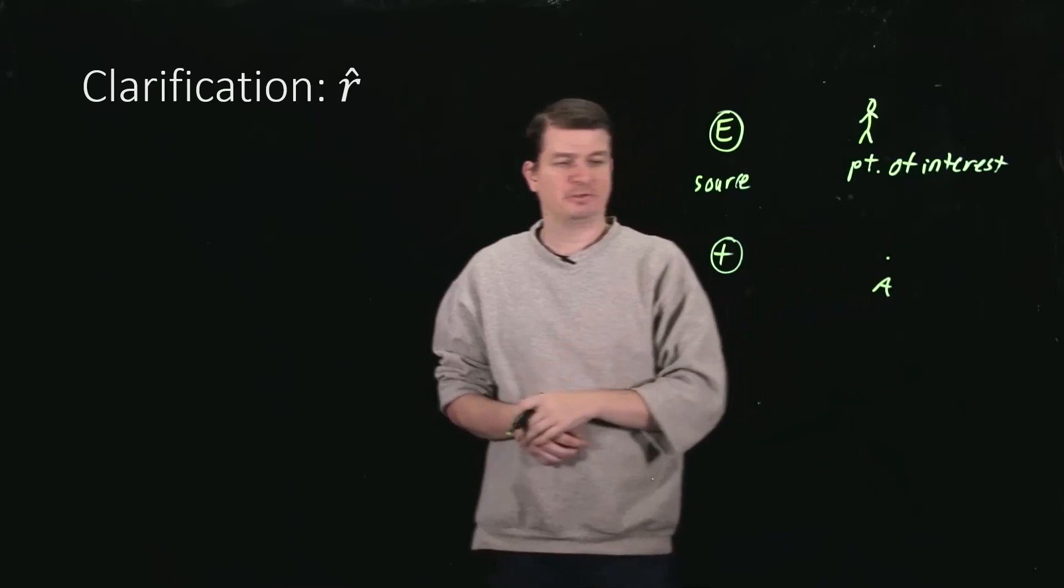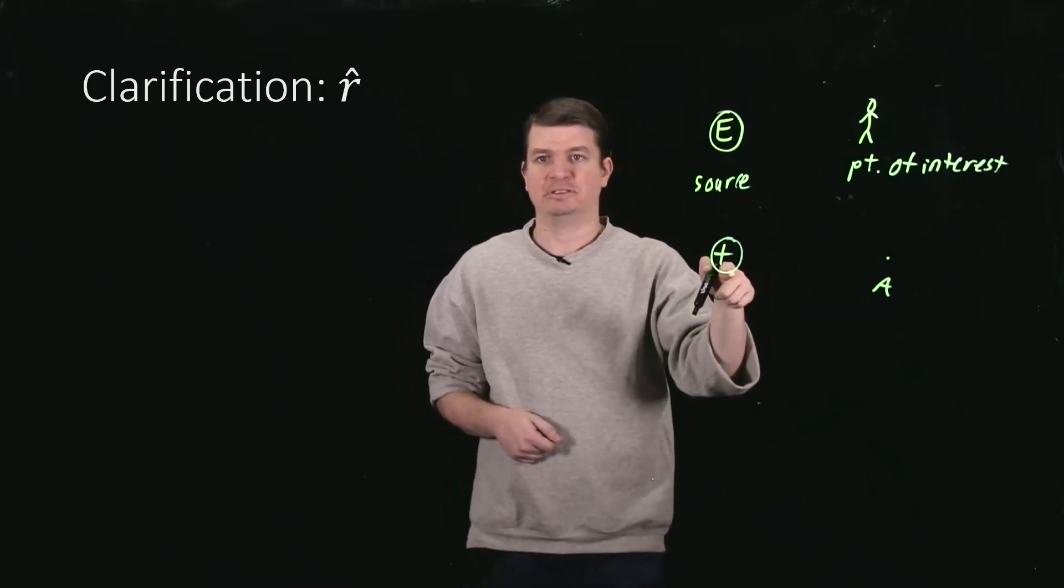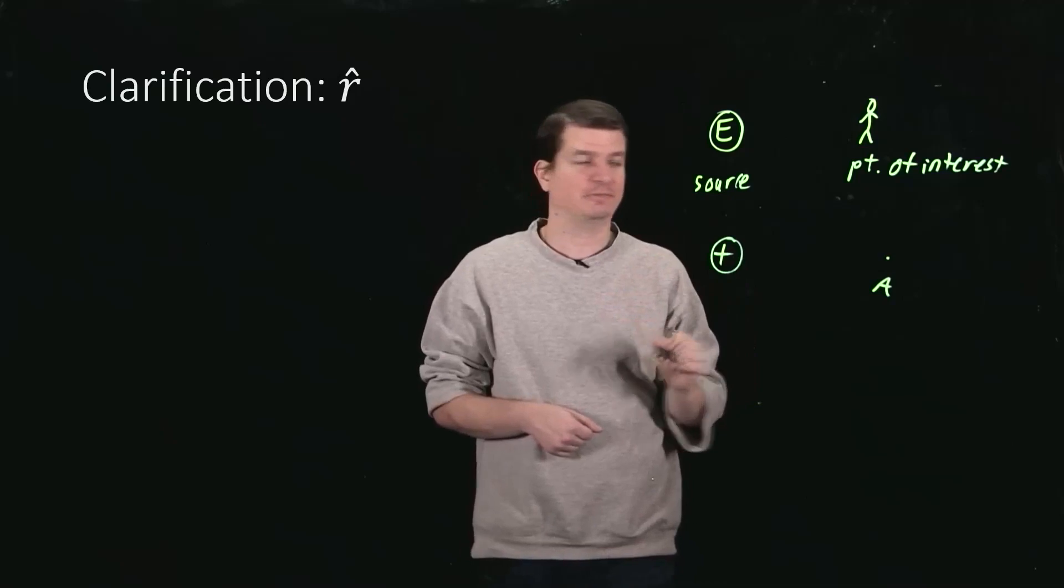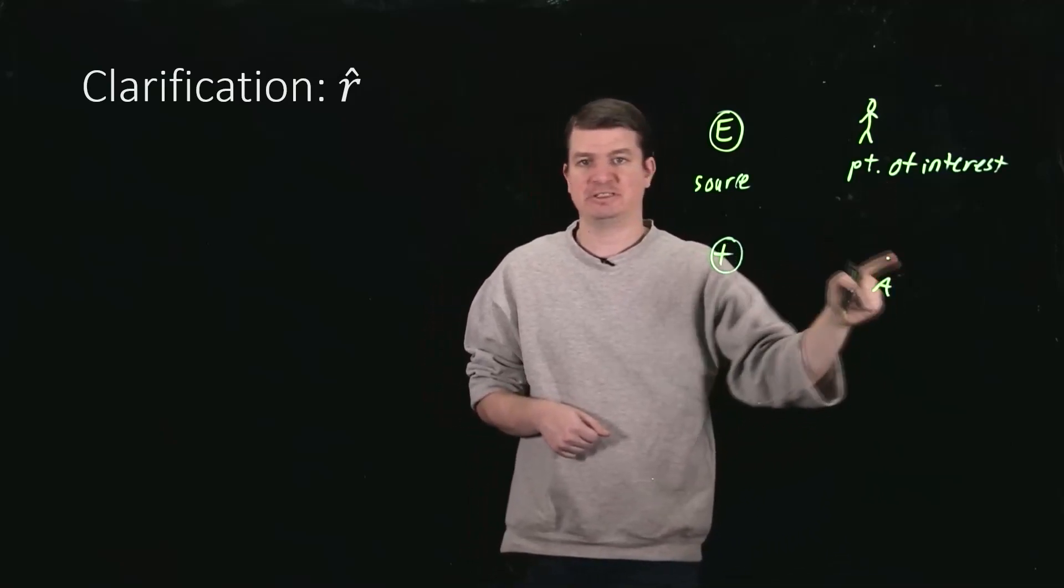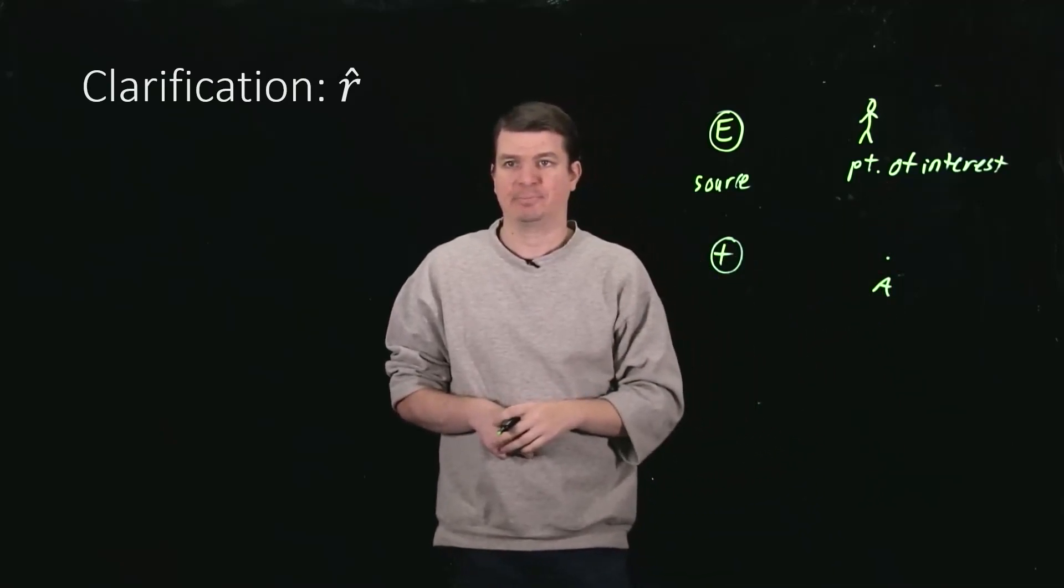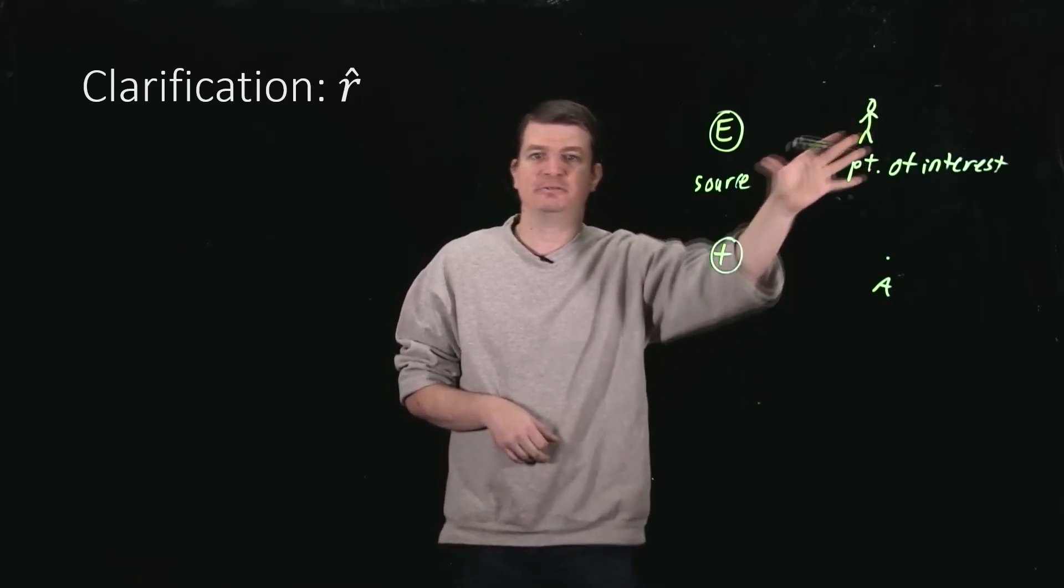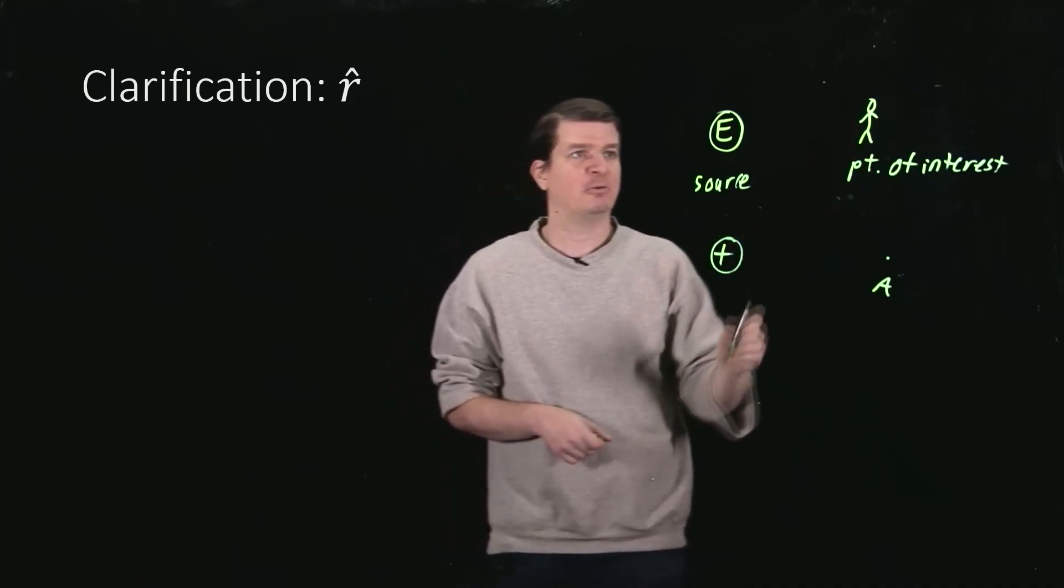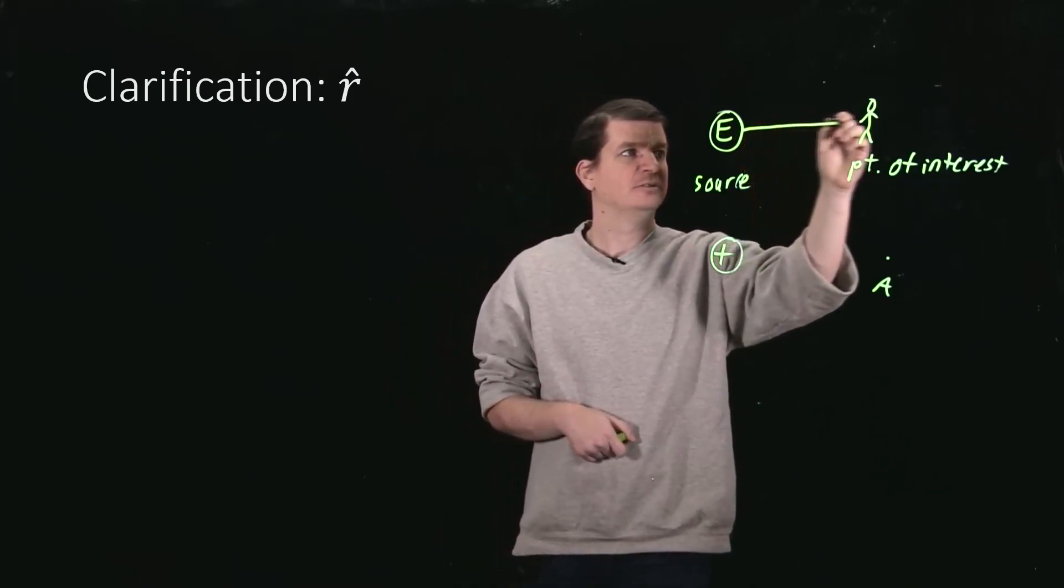So if we're looking again, then that's a source. The positive charge is a source of the electric field. And we've got a point of interest, this arbitrary point A. R-hat in all of these scenarios is always from the source to the point of interest.